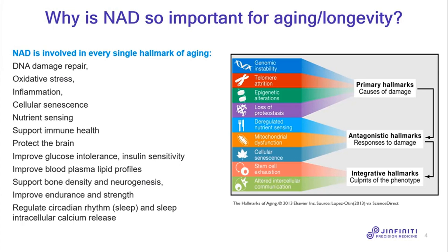The most important ones are listed on the left. NAD is involved in DNA damage and repair, in oxidative stress, in inflammation, cellular senescence, and nutrient sensing. It's important for supporting immune health, protecting brain function, improving glucose tolerance and insulin sensitivity, and on and on. You can read this slide probably faster than I can.